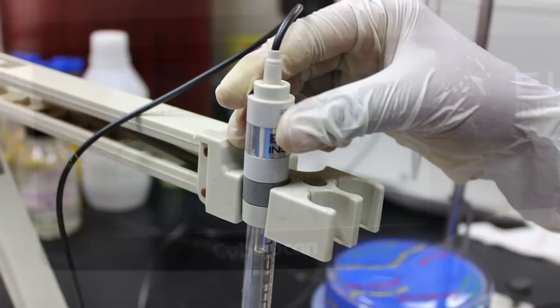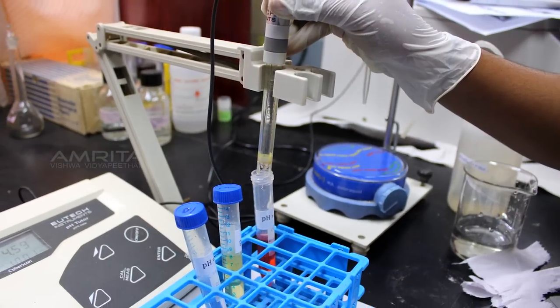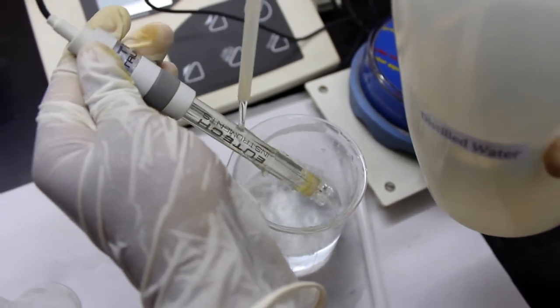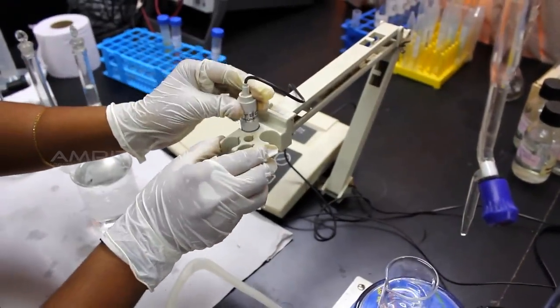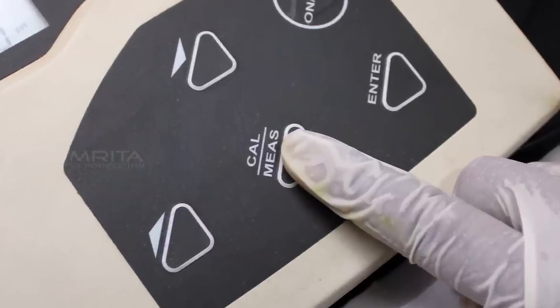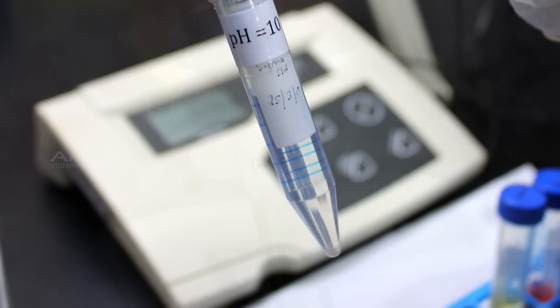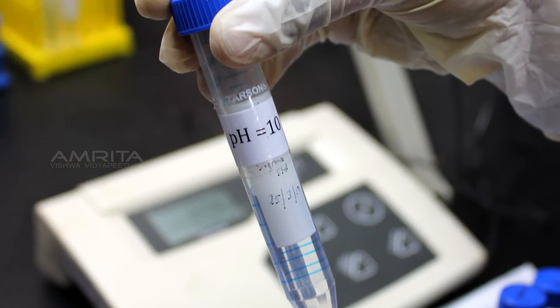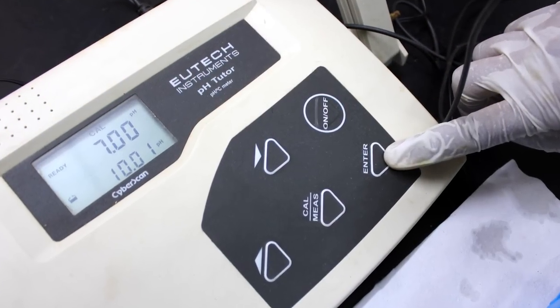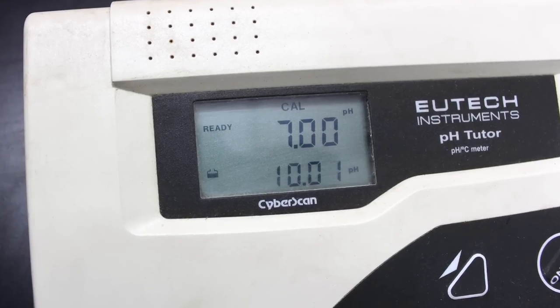Take out the pH electrode from the pH buffer labeled pH equals 4 and wash the electrode thoroughly with distilled water and wipe the electrode after placing it back on the stand. Repeat the same step while dipping the pH electrode into the standard buffer labeled pH equals 7 and pH equals 10 respectively. Now record the value displayed on the pH meter which is observed as 7 and 10.